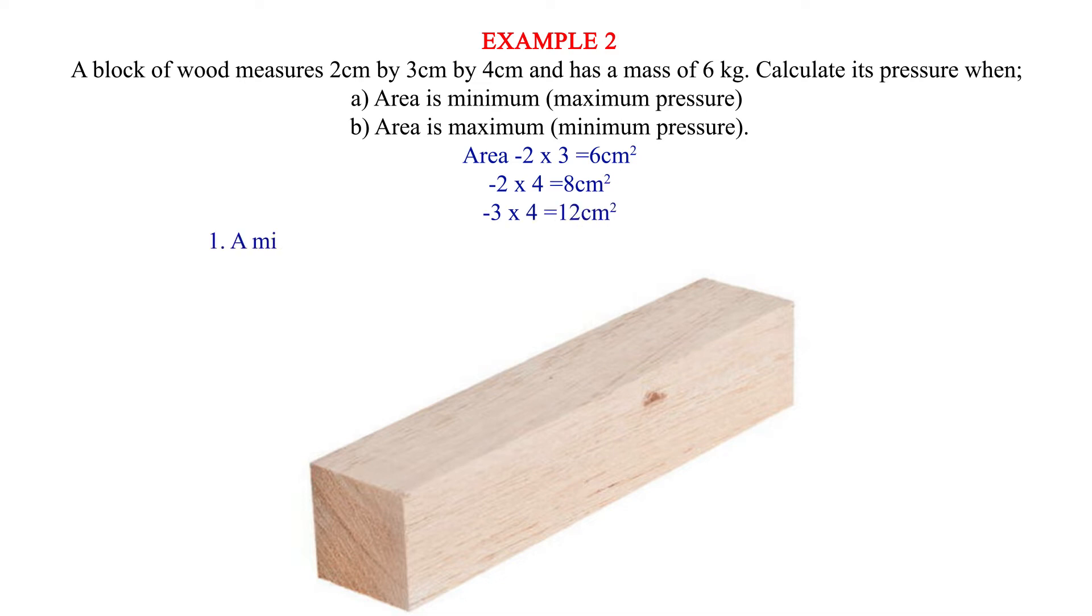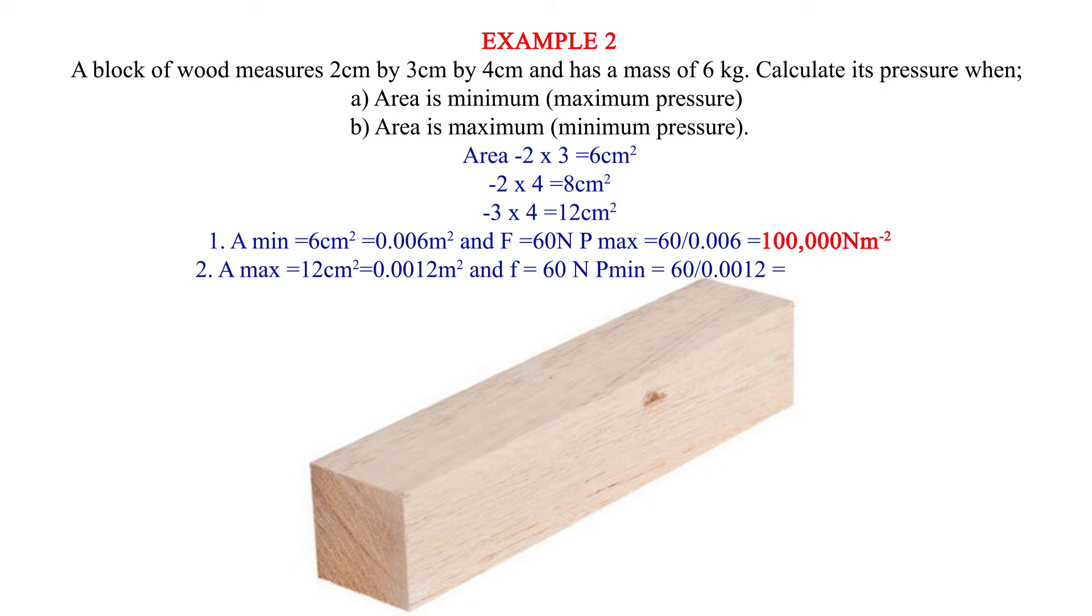1. A min equals 6 cm square equals 0.006 meters square and F equals 60 newtons. P max equals 60 over 0.006 equals 100,000 newtons per meter square. P min equals 60 over 0.0012 equals 50,000 newtons per meter square.